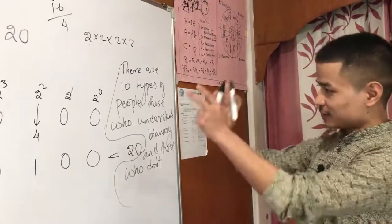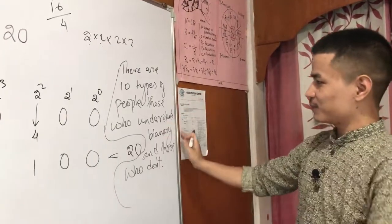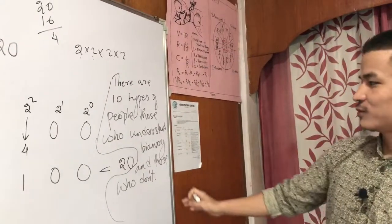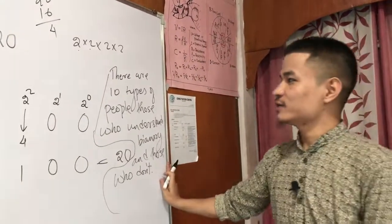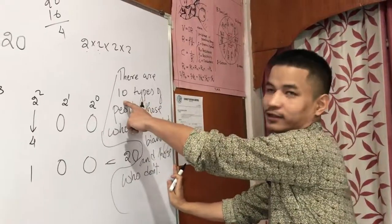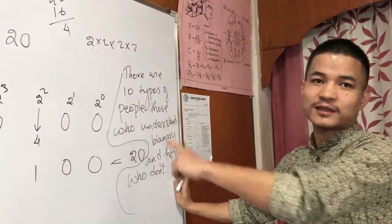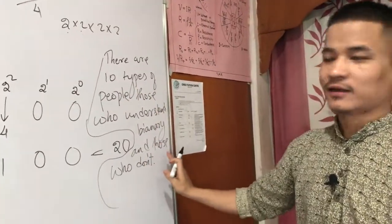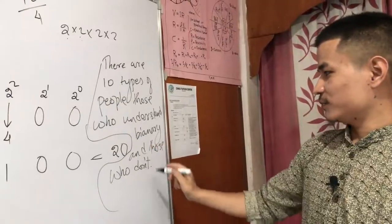There are 10 types of people: those who understand binary, and those who don't. Here is the number of two types of people, and here is the number of binary types of people — so here is binary.